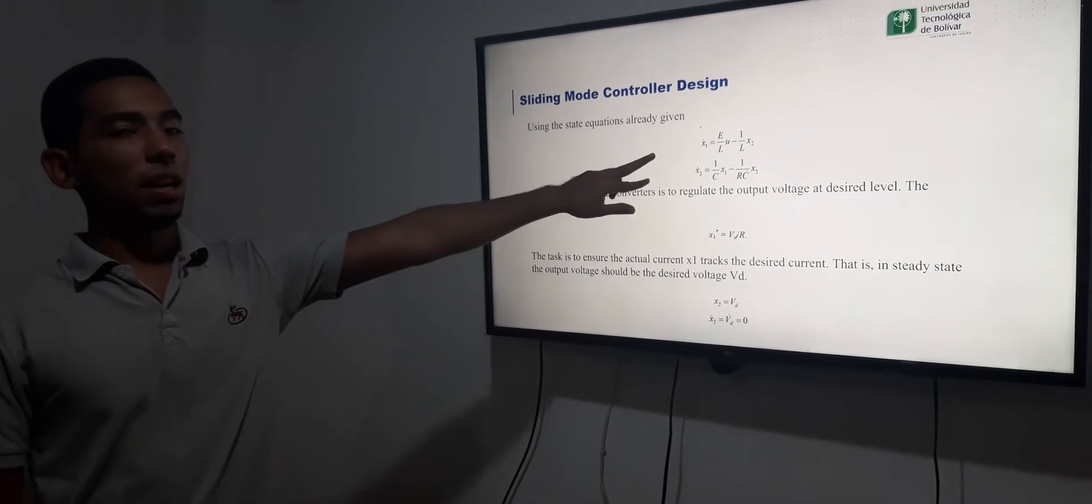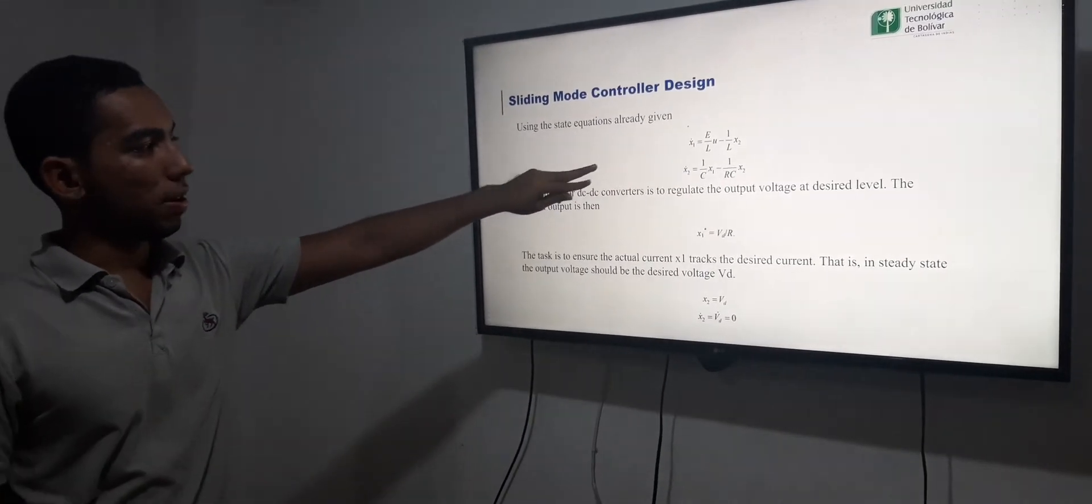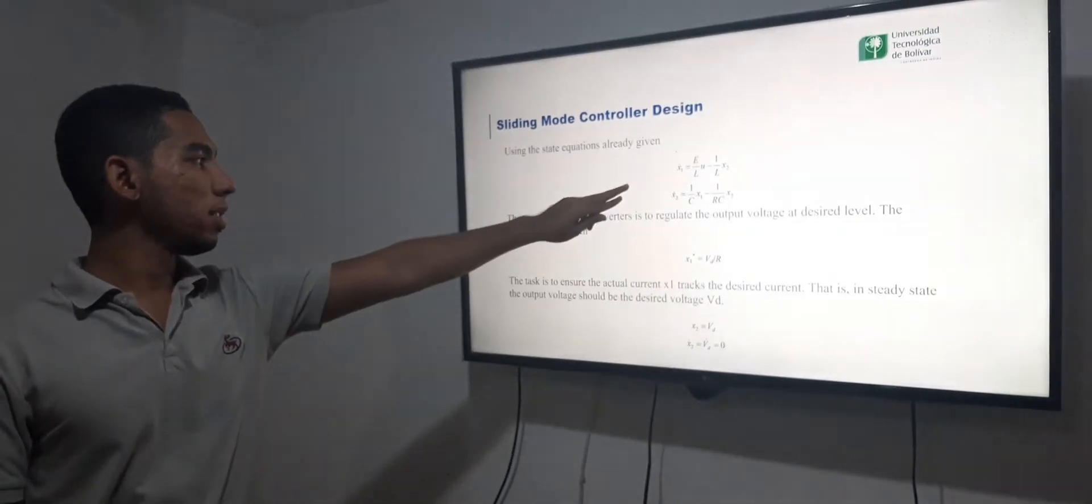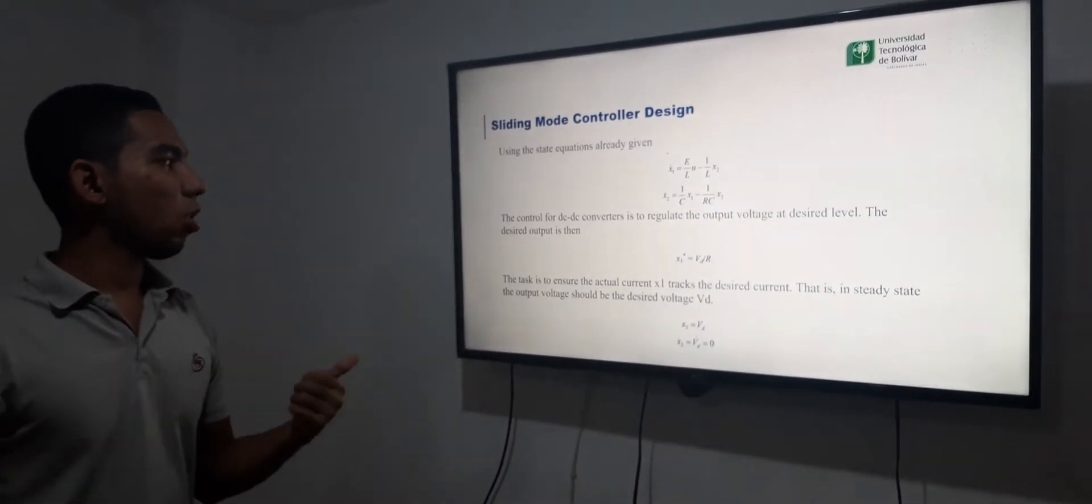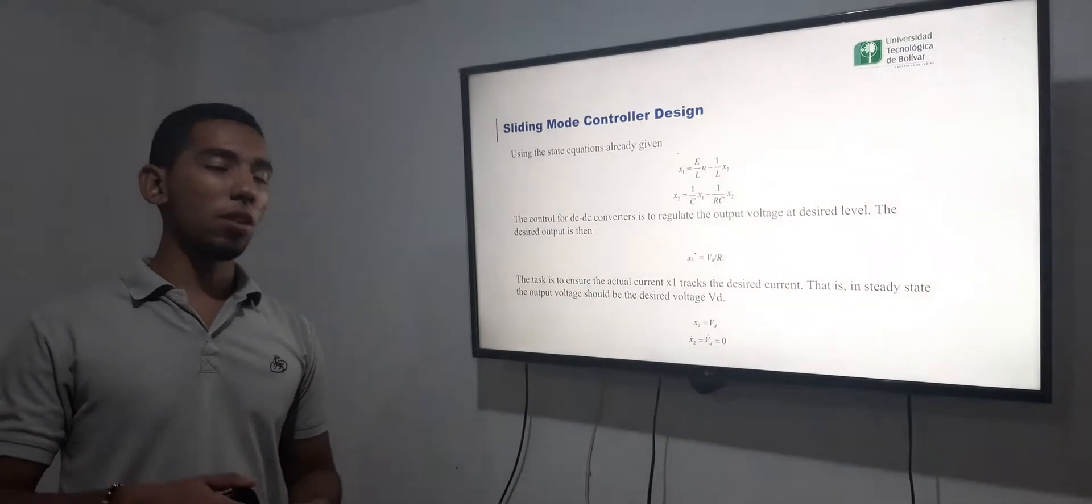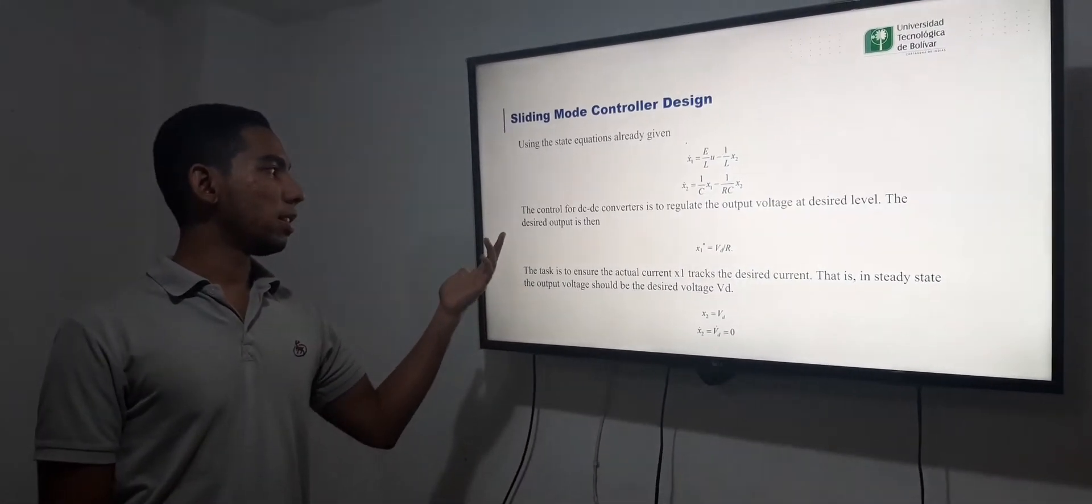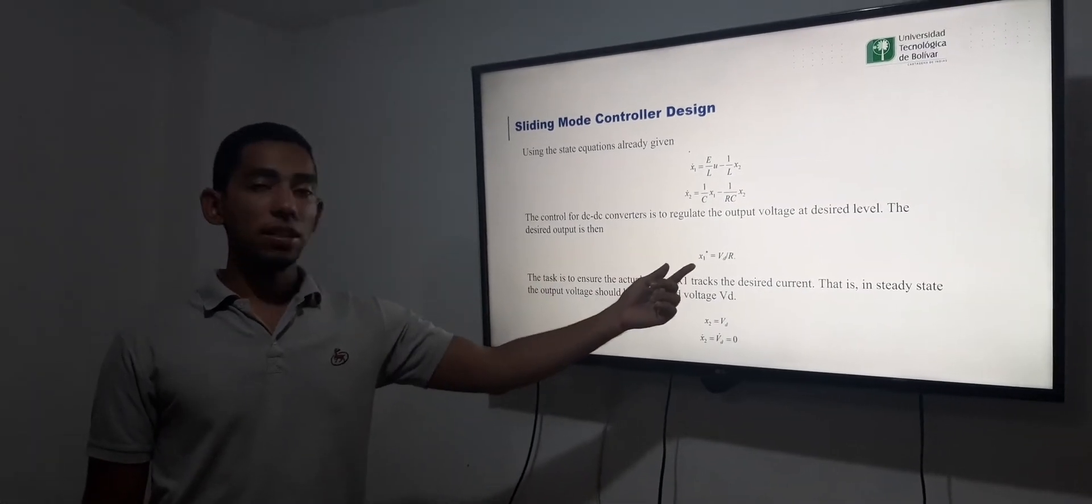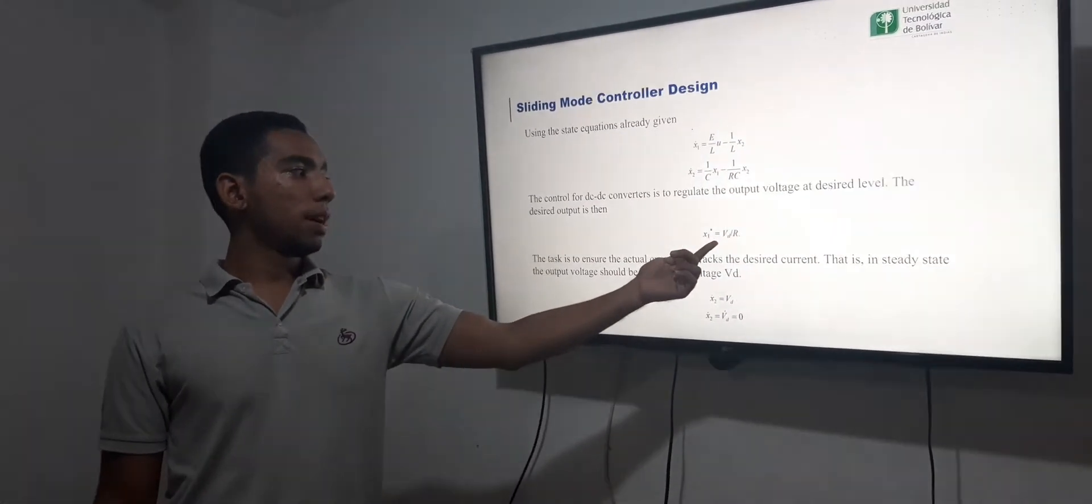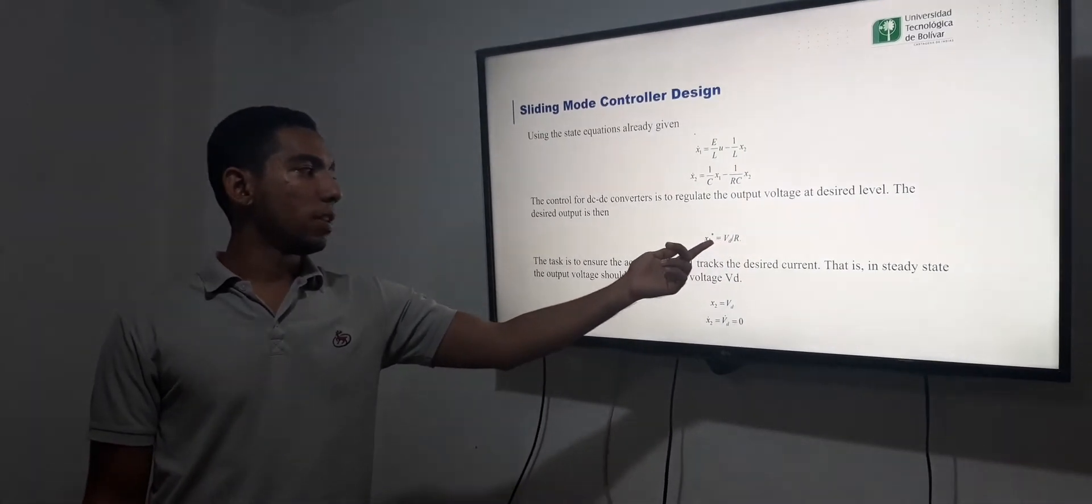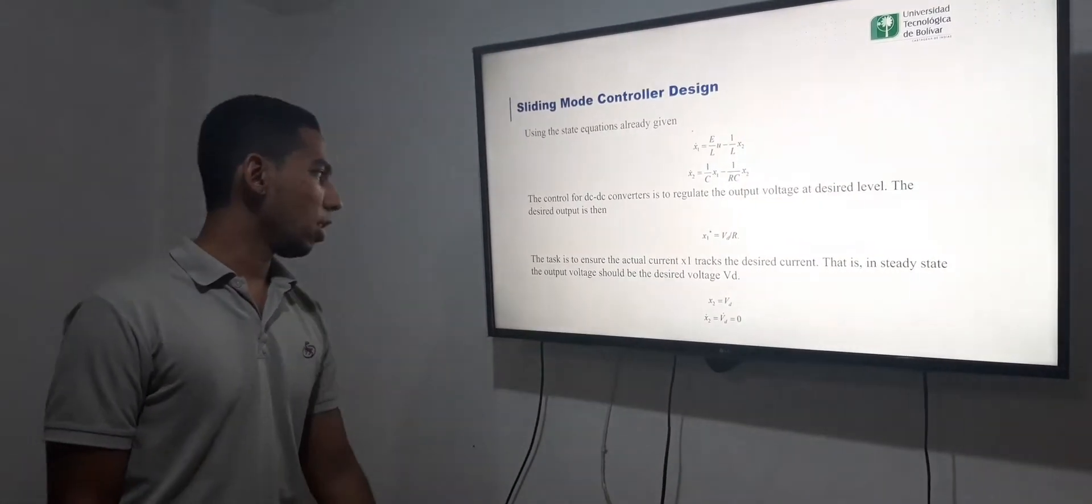Here we have the state space equations. The first equation in state space where the control for DC-DC converter is to regulate the output voltage to a desired level. So the desired output, in this case the current, is given by the desired voltage divided by the load.